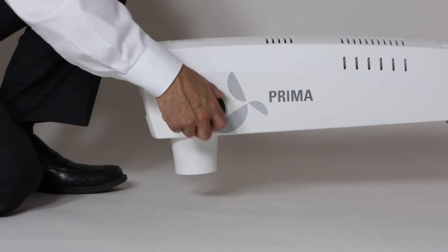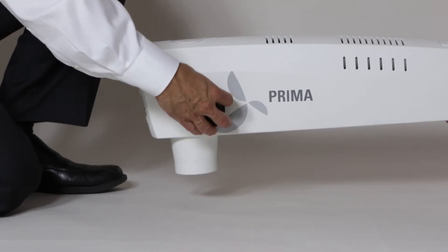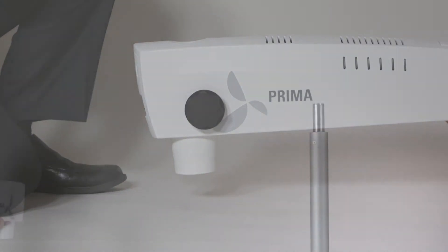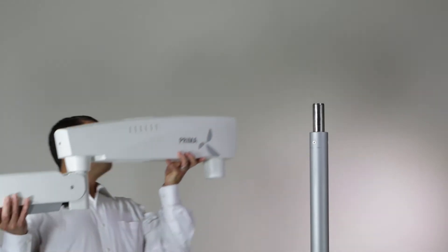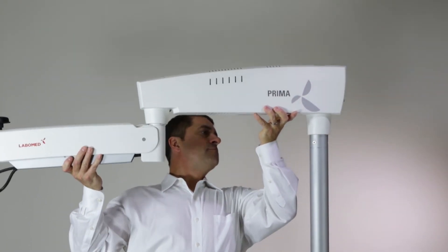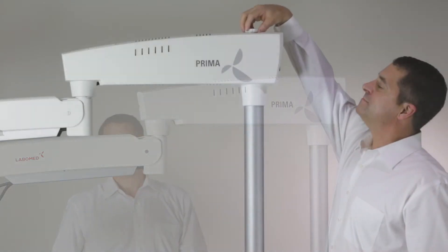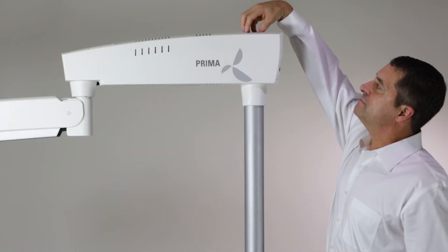Loosen the tension knob closest to the power switch as much as possible and remove the dust cap at the top. Place the arm onto the column. Ensure the lip covers the three screws at the top of the column. Insert the cap screw and put the dust cap back on.